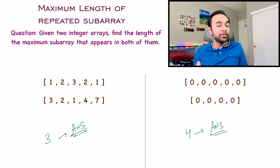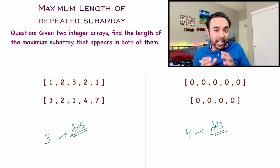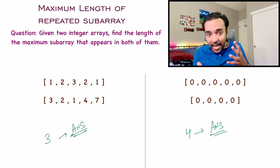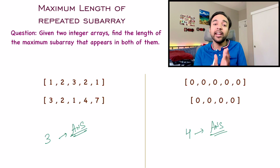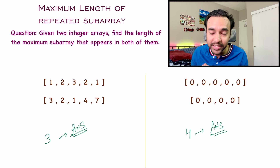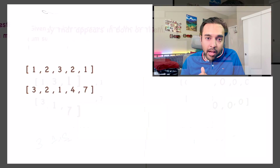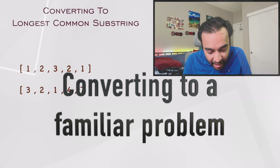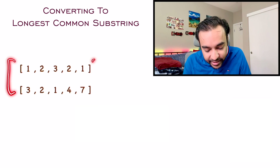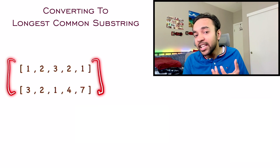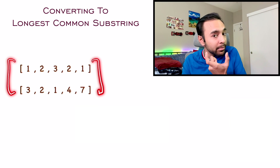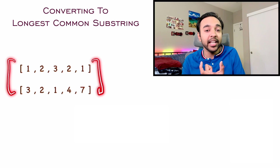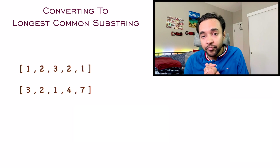If you feel that you have understood it, feel free to try it out first. Otherwise, let us dive into the solution and see how we can compare it to finding the longest common substring. I have a sample test case — these two arrays — and I need to find out the length of the maximum contiguous subarray that is common in both of them.